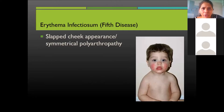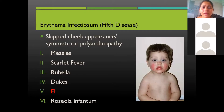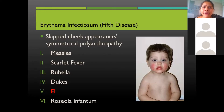The numbered childhood diseases in chronological order: First disease is measles; second is scarlet fever, caused by Streptococcus pyogenes Group A; third is rubella; fourth was known as Duke's disease; fifth is Parvovirus B19 — Erythema Infectiosum; and sixth is Roseola Infantum, caused by Human Herpesvirus 6, also called Exanthema Subitum.